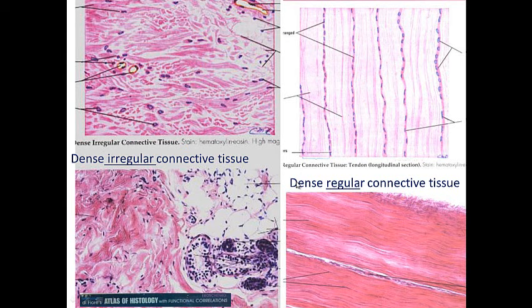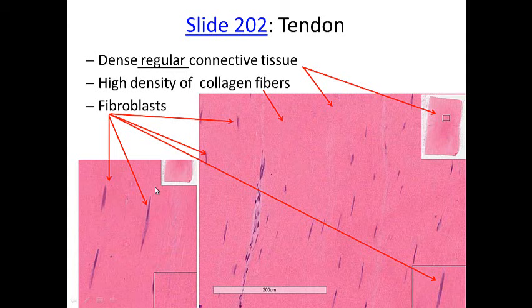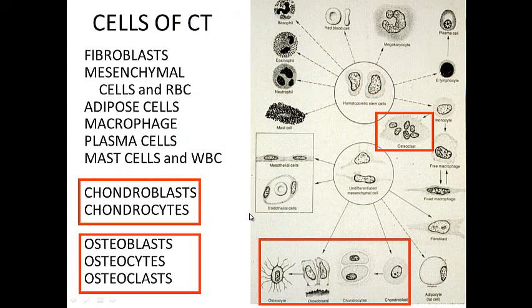We can have dense irregular connective tissue — fibers running in different directions — and we can have dense regular connective tissue, which is what we have in a tendon. In a tendon, the nuclei of fibroblasts are spaced far apart with lots of fibers in between, hence dense. The fibers all run in one direction, which is regular. In dense irregular connective tissue there is a high density of fibers but fibroblasts are present, including fibroblasts supporting blood vessels running through there.